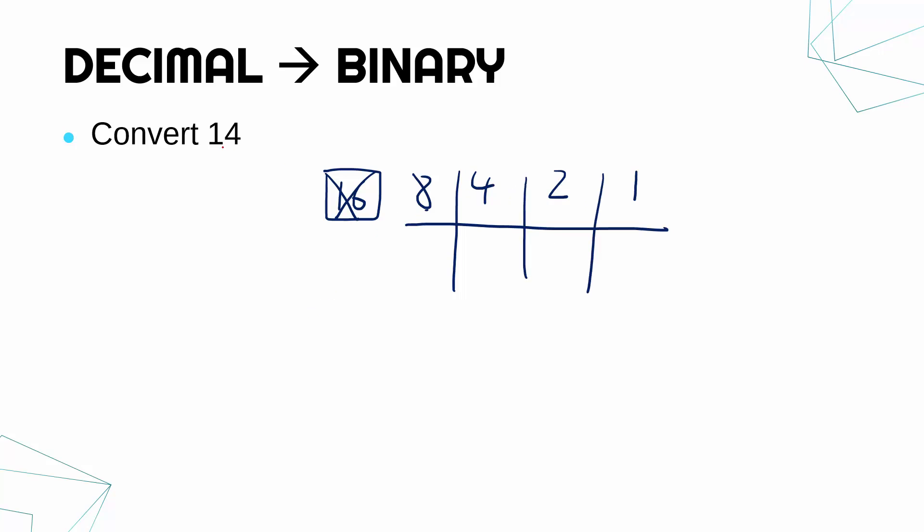Now, the process to convert to the number here is to work left to right and work through the column headings. You might be able to see the answer here already, but for bigger numbers you've got to follow the same method. So always start with your far left column, which is eight in this case, and ask yourself, how many times does eight go into 14? Well, because eight is smaller than 14, it goes in once. And so you write down a one under the eight column.